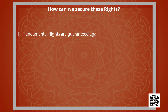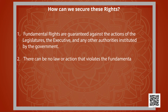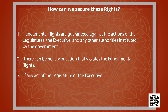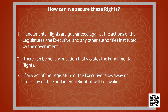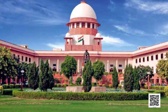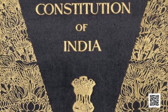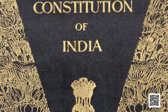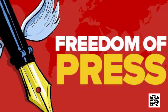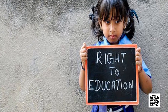Fundamental rights are guaranteed against the action of the legislature, the executive, and any other authorities instituted by the government. There can be no law or action that violates fundamental rights. If any act of legislature or executive takes away or limits any fundamental right, it will be invalid. Fundamental rights are the source of all rights. Over the years, the scope of rights has expanded through court judgments. Rights like the right to freedom of press, right to information, and right to education are derived from fundamental rights.